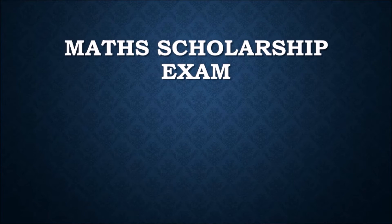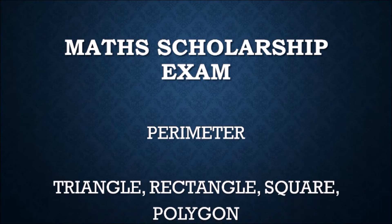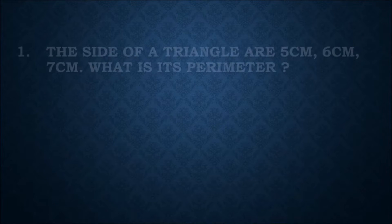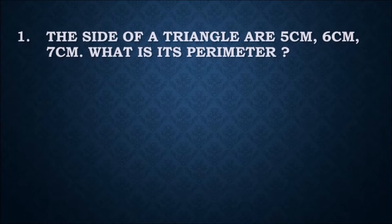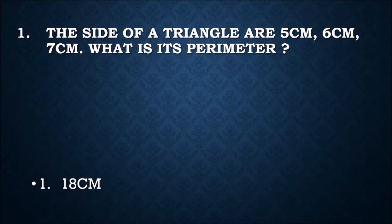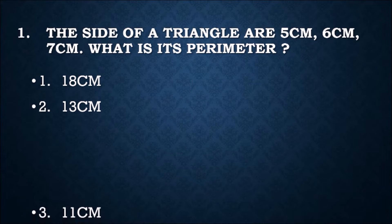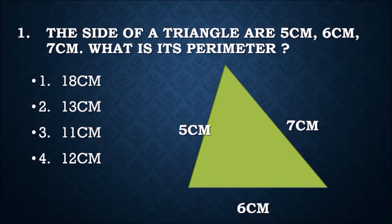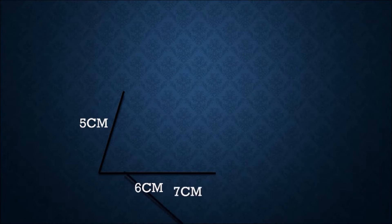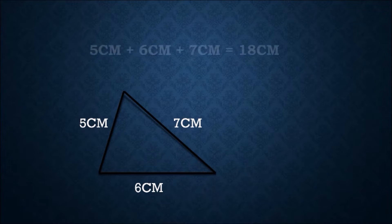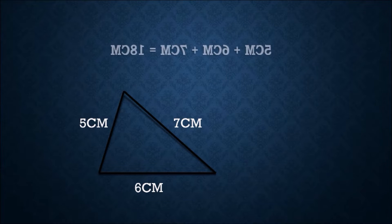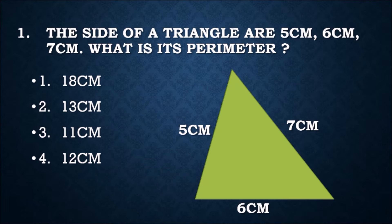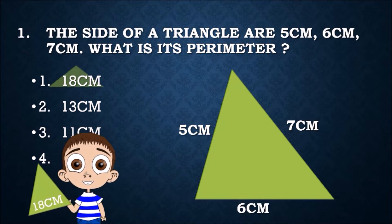Question number one: the sides of a triangle are 5 centimeter, 6 centimeter, and 7 centimeter. What is its perimeter? Options: 18 centimeter, 13 centimeter, 11 centimeter, or 12 centimeter. Look at this triangle — first side 5 cm, second side 6 cm, third side 7 cm. The addition of all three sides is 18 centimeter. Therefore, first option 18 centimeter is our answer.